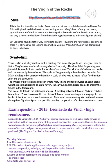Fra Filippo Lippi reduced the halo to a narrow ring around Mary's head — rather than the large gold disc-type halos seen from medieval times and even in Giotto's work, Lippi made the halo a bit smaller. But Leonardo da Vinci took it further and got rid of the halos completely. Clearly the unreal symbolic nature of the halo was not in keeping with the realism of the Renaissance. It was a necessary holdover from the Middle Ages because they didn't know how else to indicate the main divine, holy figure. But Leonardo da Vinci found another way — by giving the figures ideal beauty and grace, it became obvious we were looking at a mystical vision of Mary, Christ, John the Baptist, and an angel. He didn't need the halos anymore; it was obvious from his techniques that these were not ordinary people, but godlike, otherworldly figures.